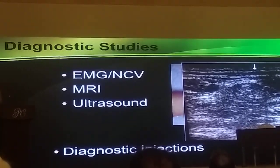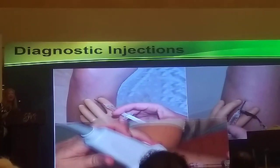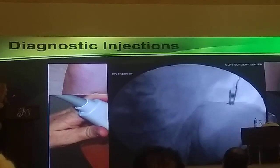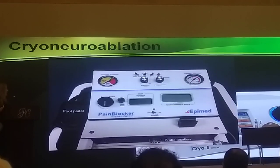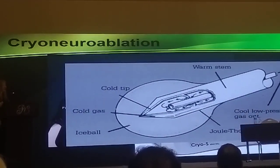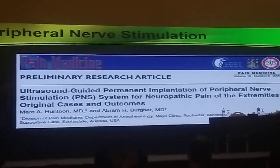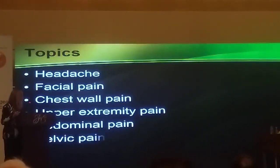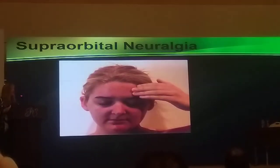Probably the most important diagnostic tool is the diagnostic injection, which can be landmark guided, performed with a peripheral nerve stimulator, ultrasound, CT, or fluoroscopy. Other treatments include cryoneuroablation for freezing nerves and ultrasound-guided permanent implantation of peripheral nerve stimulation. We'll now go through topics from head to toe, starting with headaches.